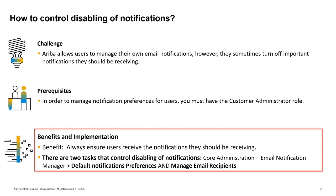There are two tasks that control disabling of notifications. Under core administration, email notification manager, choose default notification preferences and manage email recipients. Let's log into the system and take a look.